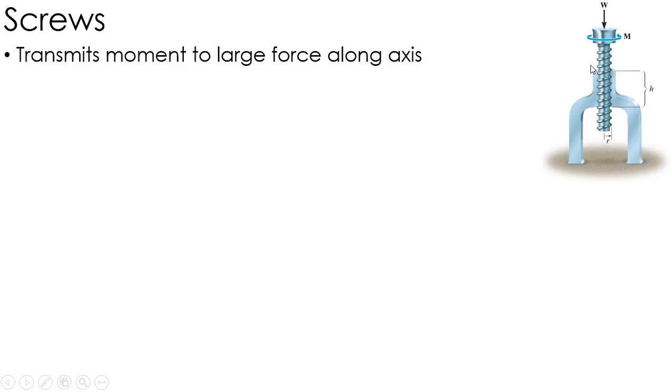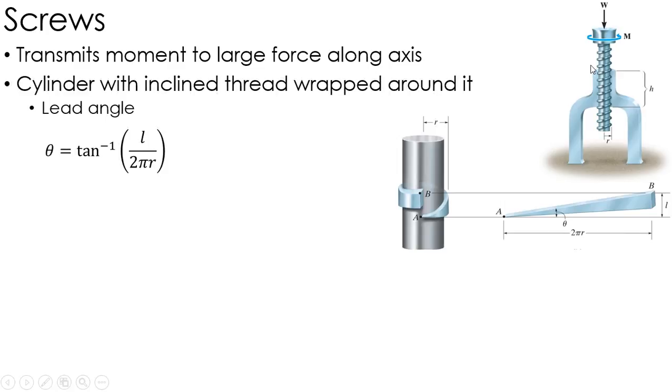So what a screw essentially is is it's a cylinder with an inclined thread wrapped around the cylinder like I have here. So my radius is R. I have this thread wrapped around. I can go ahead and I can unwrap that and I get basically an inclined plane. I get a ramp.